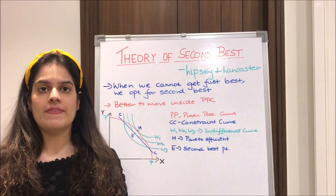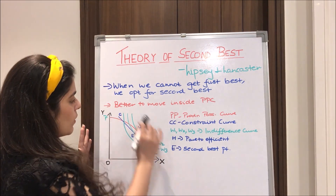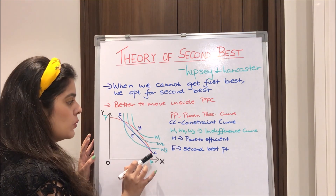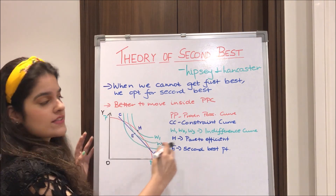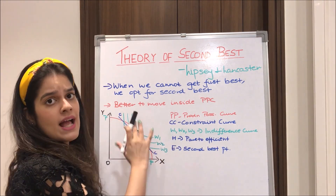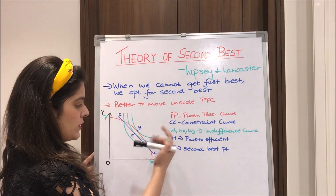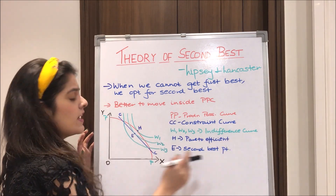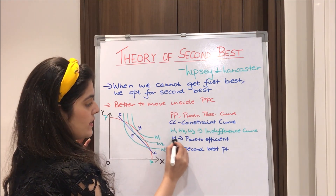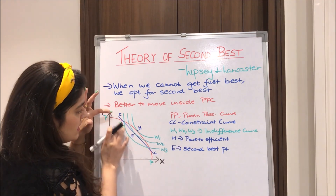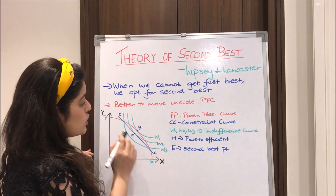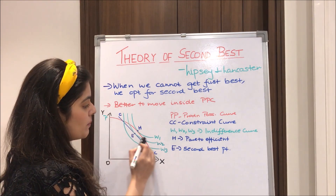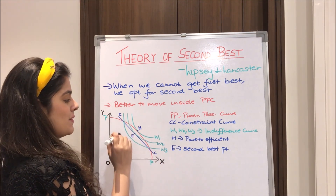I'll explain this with the help of a diagram. We have our production possibility curve PP in red, a constraint line CC in blue, and three indifference curves W1, W2, and W3 — with higher curves representing greater satisfaction. Point H, which lies on the highest indifference curve, is our Pareto efficient point. However, due to some constraint in the market represented by the CC line, we cannot go beyond it. So we stick to point E, where the CC curve intersects W2 — this is our second best point.